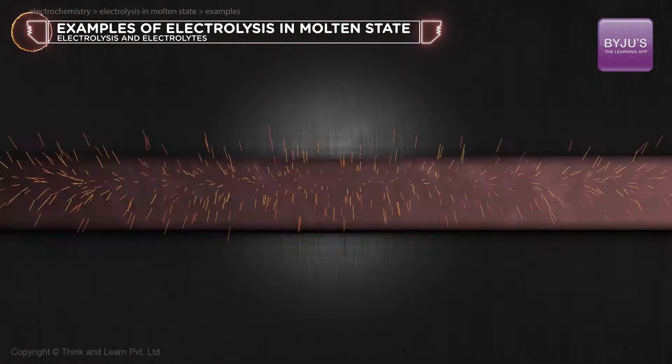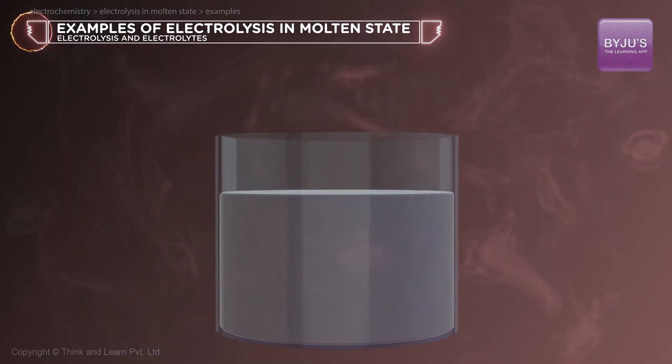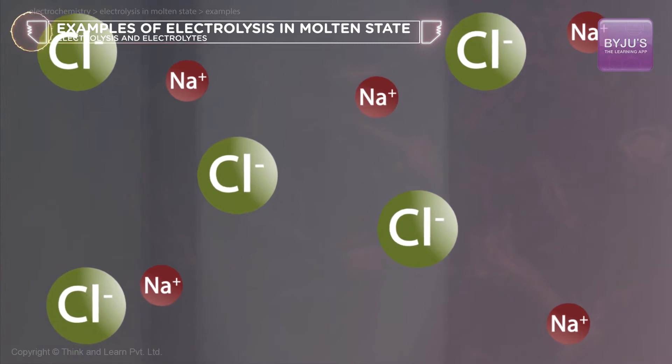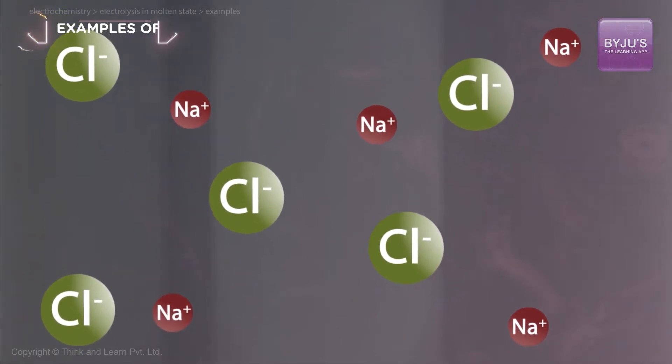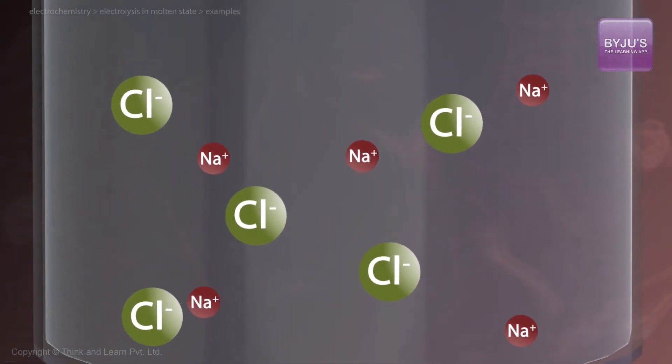Let us first look at the electrolysis of molten salts of some compounds. Molten NaCl, which is an electrolyte, means free sodium ions and chloride ions. So molten NaCl conducts current with the help of these ions.